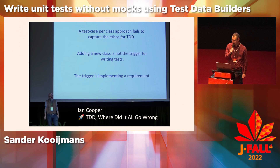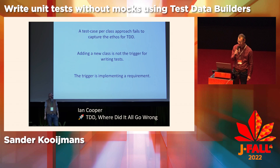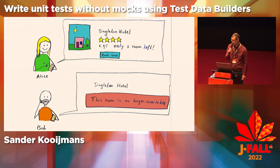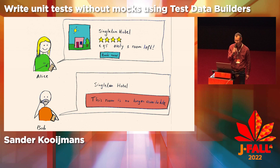But tests for more than one class cannot be unit tests. Well, Ian Cooper explains that tests must be written for requirements, not per class or per method. So I want to test this requirement: given that Alice books the last available room of a hotel, when Bob books a room in the same hotel, then he is notified that the room is no longer available.